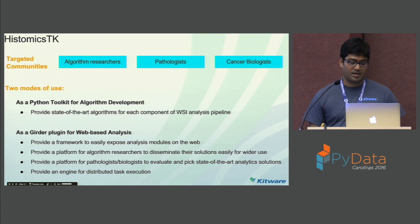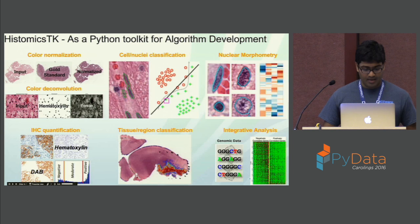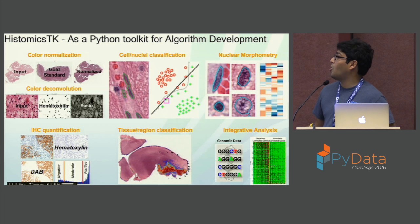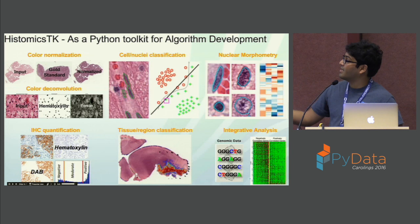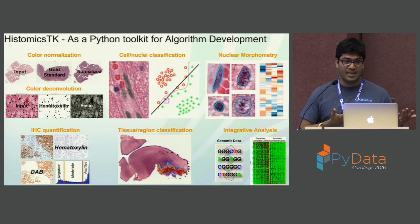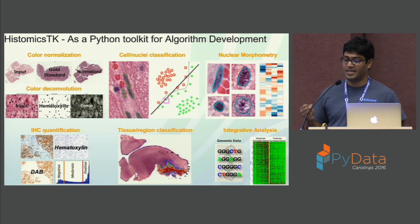It has a backend engine for distributed task execution based on Celery. Coming to the first mode of use as a Python toolkit, these are all the algorithms we are building into HistomicsTK, beginning with pre-processing. There are already functions for color normalization — if there is non-uniform staining, you can correct and normalize them. There's color deconvolution, which involves algorithmically separating multiple stains applied to an image.